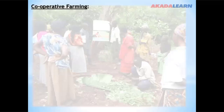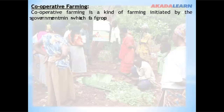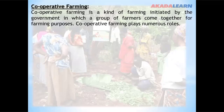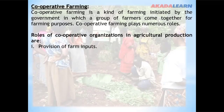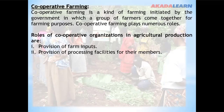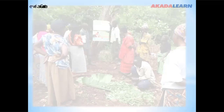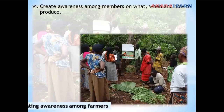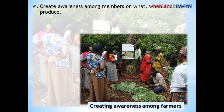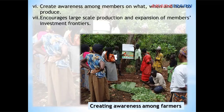Cooperative Farming is the kind of farming initiated by the government in which a group of farmers come together for farming purposes. Cooperative farming plays numerous roles in the development of agriculture. These roles are: provision of farm inputs for the members, provision of processing facilities for their members, provision of storage facilities for the members, provision of ready market for farm produce, provision of funds or capital for their members, creating awareness among members on what, when and how to produce, and encouraging large-scale production and expansion of members' investment frontiers.